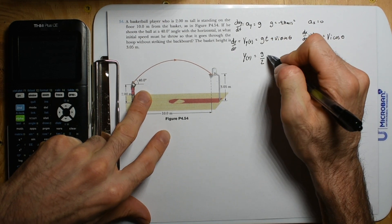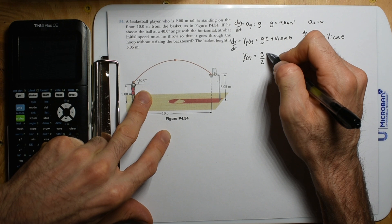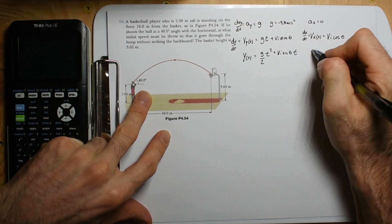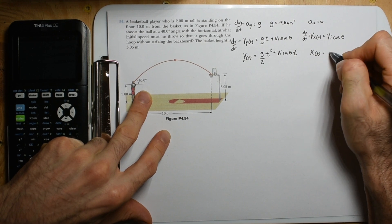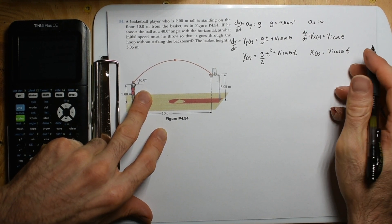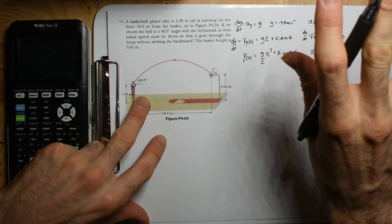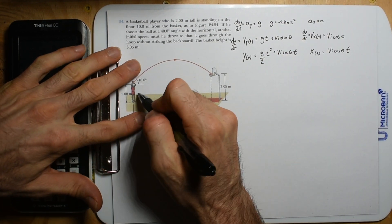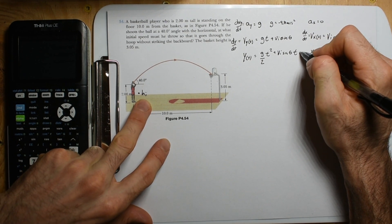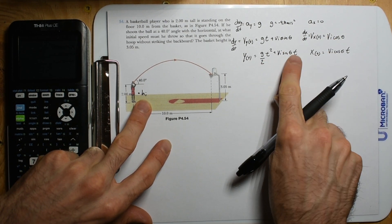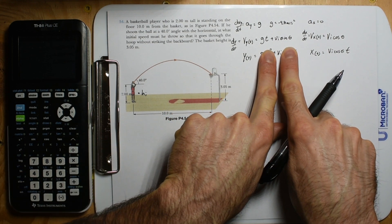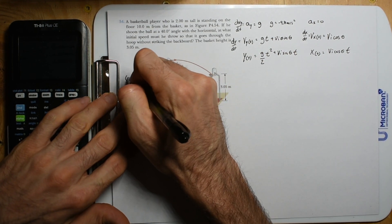Now we'll do the same process but with just letters — pure variables — to get a general equation. We can even have it as a function of gravity. I'll say a_y equals g, where gravity is negative 9.8 meters per second squared. Then a_x equals zero. Integrating dv_y/dt gives v_y(t) = g*t plus a constant, which is v_initial sine(theta). And v_x(t) will just be the constant v_initial cosine(theta).